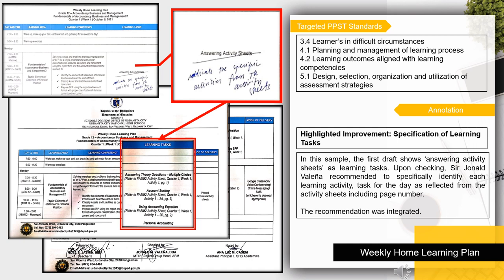The highlighted improvement for this sample of WHLP is the specification of learning tasks. In the first draft, the WHLP showed string activity sheets as learning tasks. Upon checking, Sir Johnnell recommended specifically identifying each learning activity and task for the day as reflected from the activity sheets, including page numbers. The recommendation was integrated.